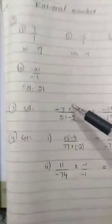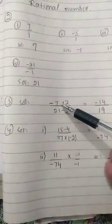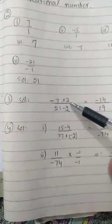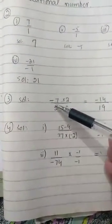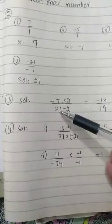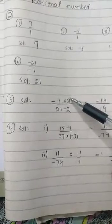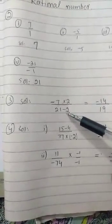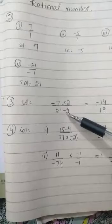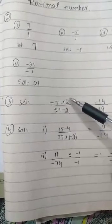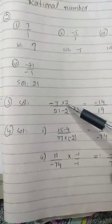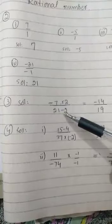You have to write in the solution numerator is minus 7 multiply 2 and in the place of denominator you have to write 21 minus 2. Because numerator is the upper part of a fraction and denominator is the lower part. In the question, whatever is written with numerator we will write on top and whatever is written with denominator we will write below, right?